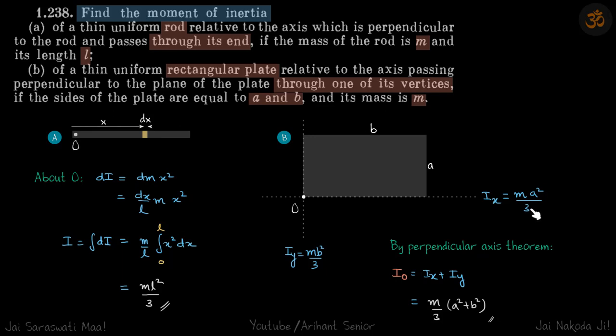Now by perpendicular axis theorem, I about O is equal to Ix plus Iy, which is m by three into a square plus b square, our answer.